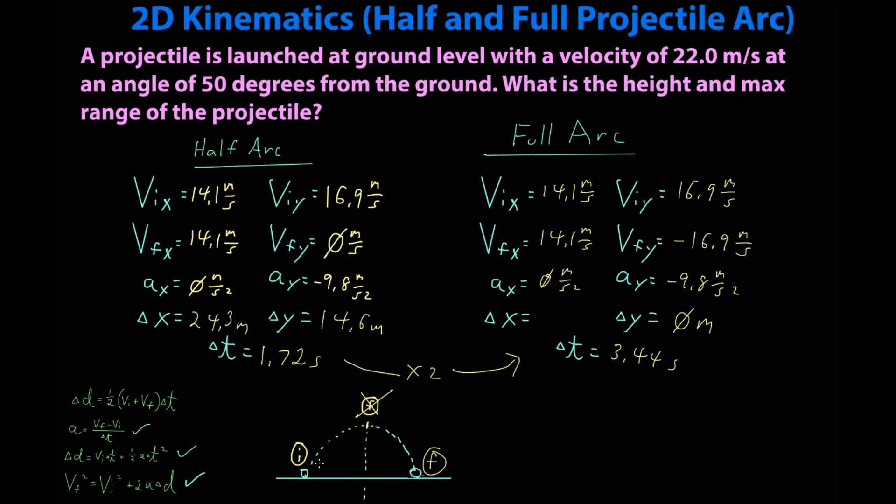So again, if this is perfect symmetry, the first half of the arc is an exact mirror of the second half of the arc. Therefore delta x can again be multiplied by 2, which would give me 48.6 meters. This is the full range. So to answer my questions, my max height is here, 14.6 meters above the ground, and the full range when it hits the ground again is 48.6 meters.